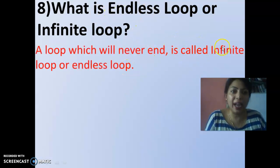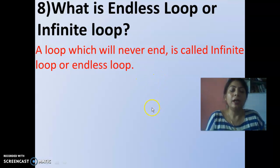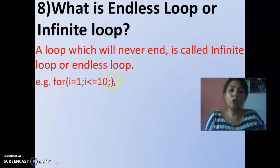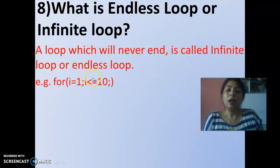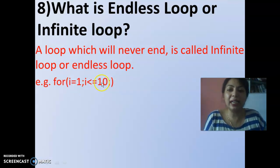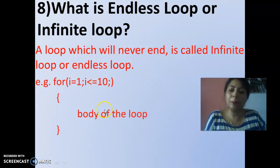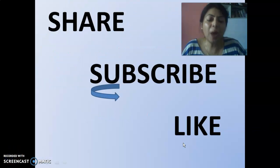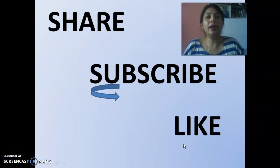What is an endless loop or infinite loop? By the name you can understand — it never ends. If you give a condition which is never false, it becomes an infinite or endless loop. By mistake we can write an infinite loop — for example, if you give an initial value but forget to write the increment or decrement, then i is always 1 and 1 is less than 10 is always true, so it never ends. Whatever is written inside the body of the loop will execute again and again.